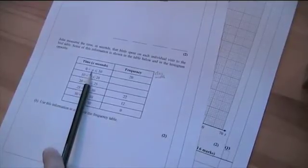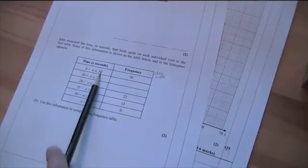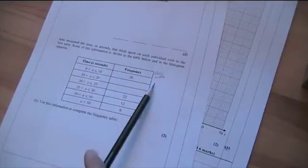This is saying x, the time is x, so the time is between 0 and 10. So, the class width would be 10.